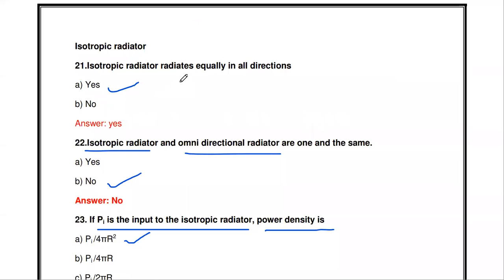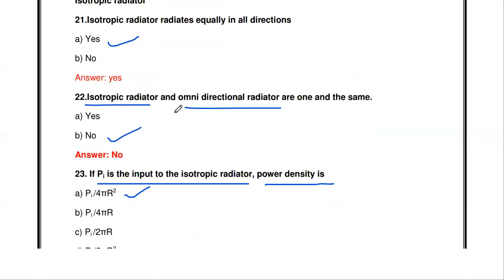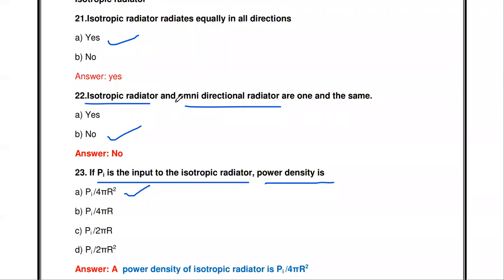The isotropic antenna is a reference antenna that radiates equally and uniformly in all directions. These are the important points about Yagi-Yuda antenna and the isotropic radiator. In the next video, we will see the remaining antennas one by one. Thanks for watching the channel — links for remaining MCQ videos are in the description box.